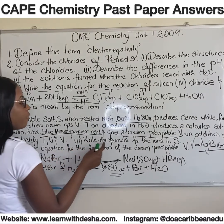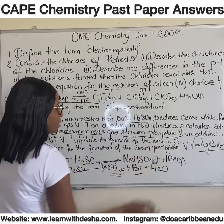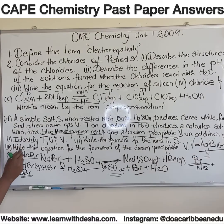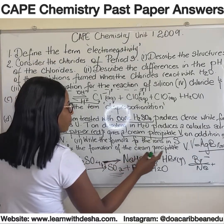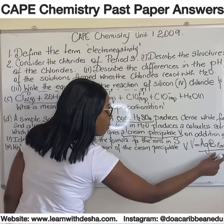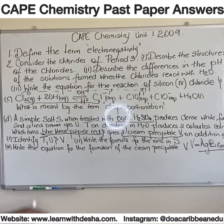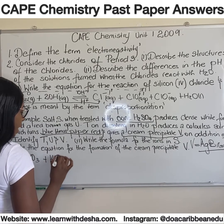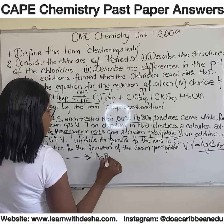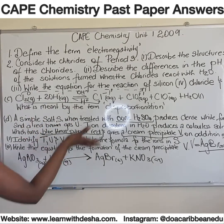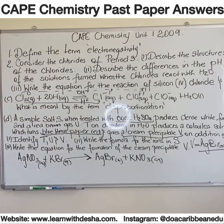Part two of the question: write the formula for the ions present in S. S was sodium bromide, so the ion is the bromide ion (Br⁻). Part three: write the equation for the formation of the cream precipitate V, which was silver bromide. To form silver bromide we need silver ions from silver nitrate (AgNO3) and bromide ions from potassium bromide, giving silver bromide. That's the end of the 2009 paper; let's move on to another past paper.